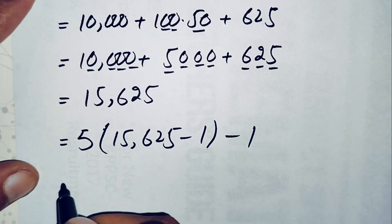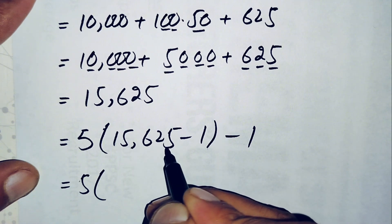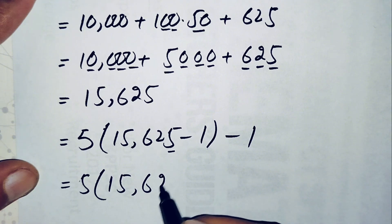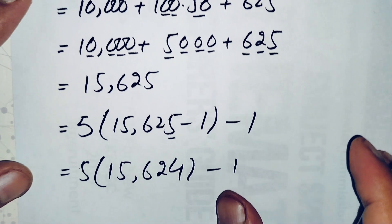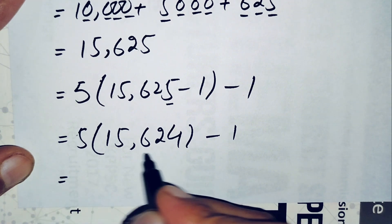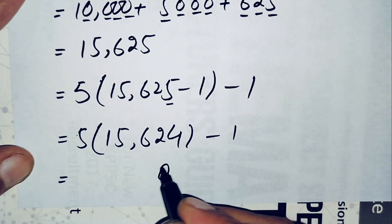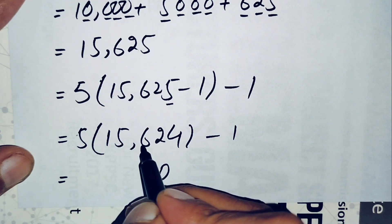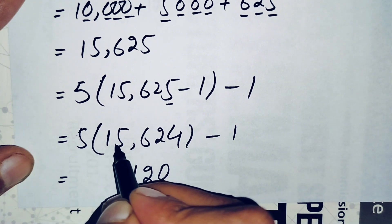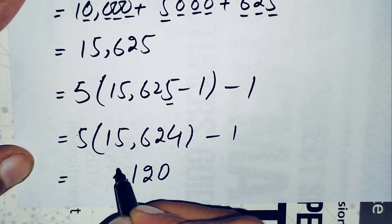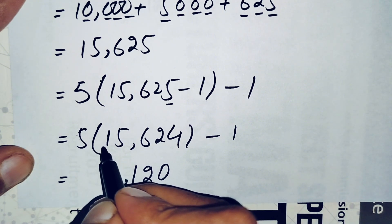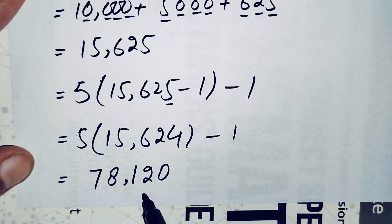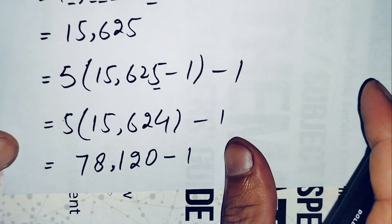Subtracting inside: 15,625 minus 1 equals 15,624. Now we multiply 5 times 15,624. Working digit by digit: 5 times 4 is 20, carry 2; 5 times 2 is 10 plus 2 is 12, carry 1; 5 times 6 is 30 plus 1 is 31, carry 3; 5 times 5 is 25 plus 3 is 28, carry 2; 5 times 1 is 5 plus 2 is 7. The product is 78,120.